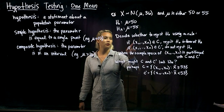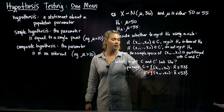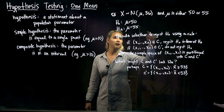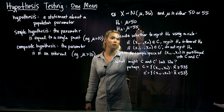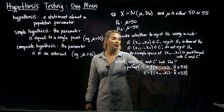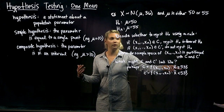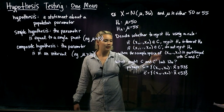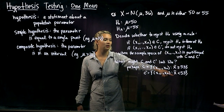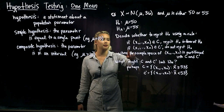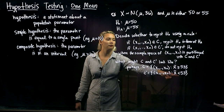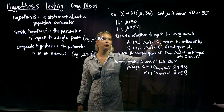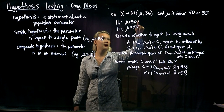If our sample lands in C — that is, if x-bar is greater than or equal to 53 — we reject the null in favor of the alternative. That makes sense: the null is mu equals 50 and the alternative is mu equals 55, so if our sample mean is big enough (greater than or equal to 53), we reject mu equals 50 in favor of mu equals 55. And C prime is the set where x-bar is less than 53, meaning if our sample mean is small enough, we do not reject the null hypothesis that mu equals 50.